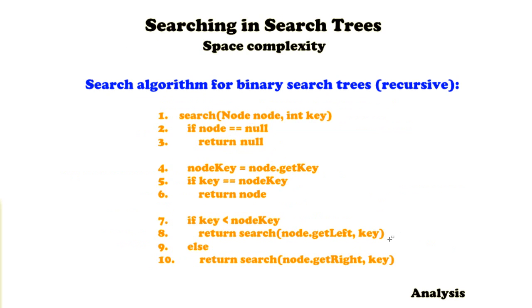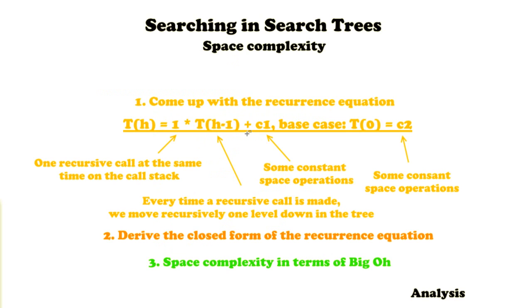If we're looking at the algorithm we see that because we're either going to recursively call search with the node on the left or on the right, so there will only be one recursive call on the call stack at the same time. Then there is T(h-1) because every time we perform a recursive call we move recursively one level down in the tree.